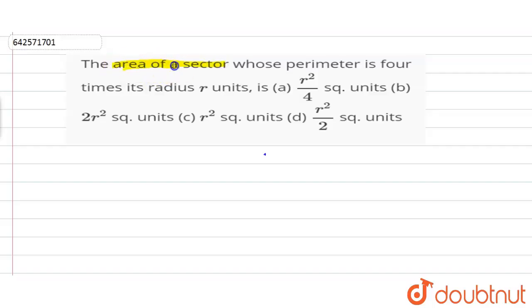We have given a sector of radius r. Let the angle of sector be theta. So perimeter of sector is equal to theta upon 360 degrees into 2πr.